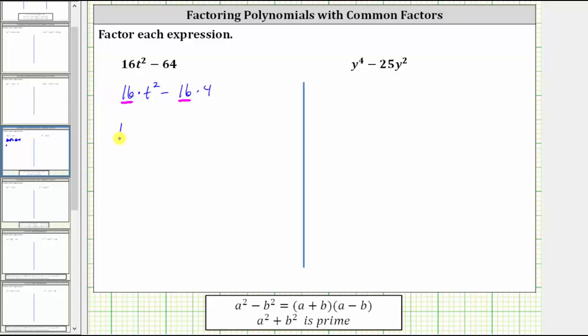So if we factor out 16, we're left with t squared minus four. And now we see if we can factor the expression inside the parentheses further. Notice t squared's a perfect square and so is four, so we can factor further.